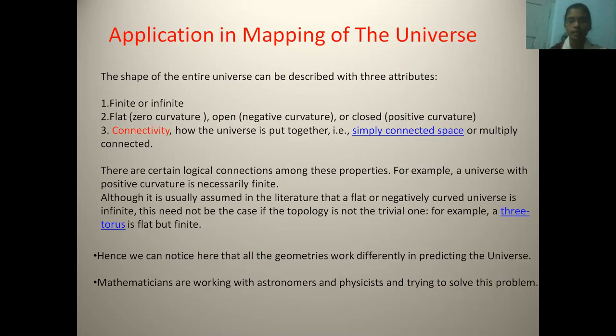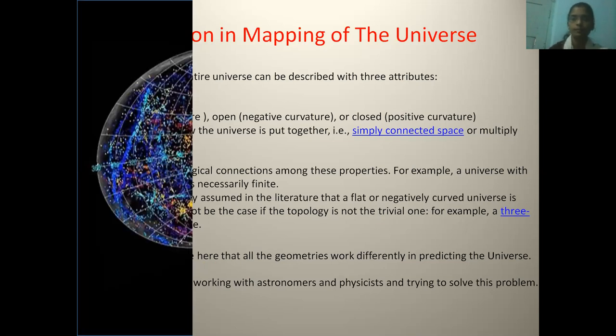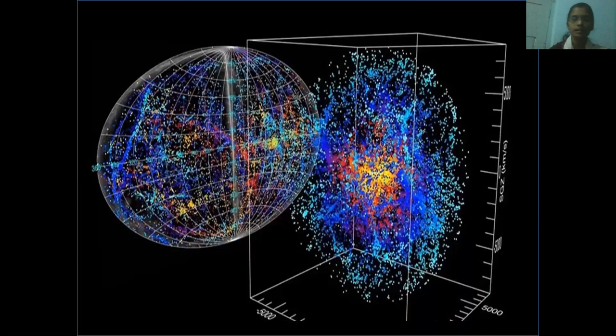Hence, we can notice here that all geometries work differently in the universe. So, mathematicians are working with astronomers and physicists and trying to solve this problem. Here we can see this 3D globe can be converted into 3D mapping of the universe.